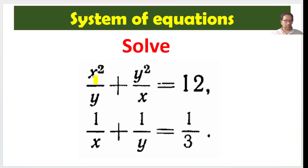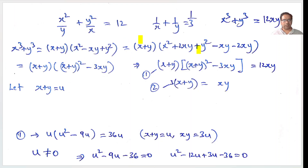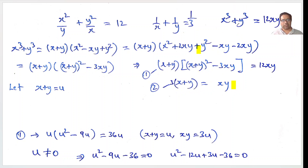Now we have x cubed plus y cubed equals 12xy, and 3 times x plus y equals xy. These are the two equations. We have cubes and we have x plus y terms and xy terms.